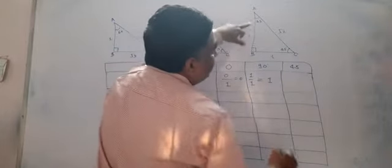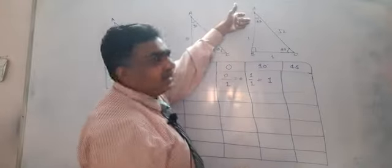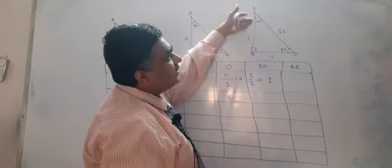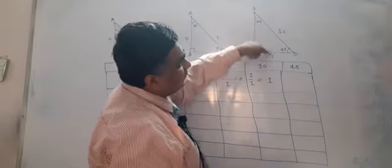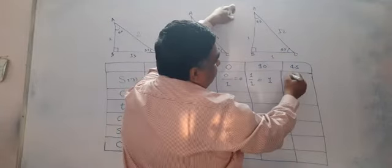Now go for sine 45. You start from this triangle. Opposite side upon hypotenuse gives 1 upon root 2.